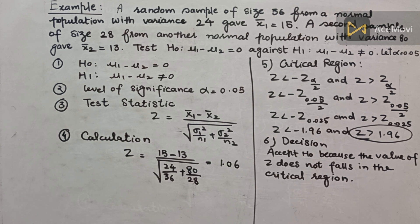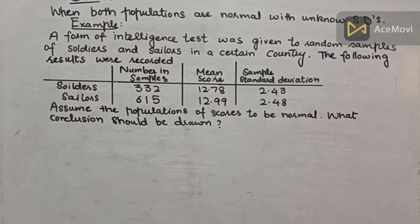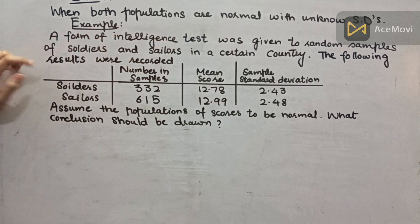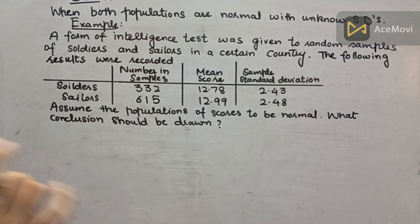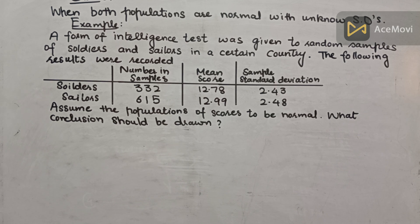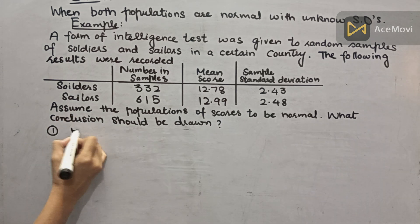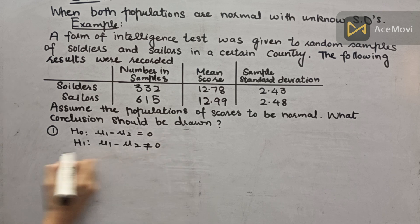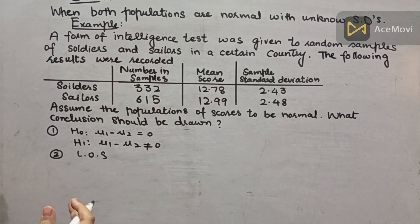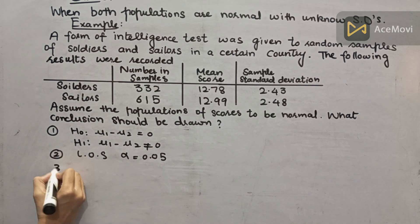Now let's go to Case 2: both populations are normal with unknown standard deviations. The example: a form of intelligence test was given to random samples of soldiers and sailors in a certain country. Results include number of samples, mean score, and sample standard deviations. Assume the populations of scores to be normal. First we write our hypothesis: H0: mu1 minus mu2 equals 0, H1: mu1 minus mu2 not equal to 0. Step 2 — level of significance: alpha equals 0.05.